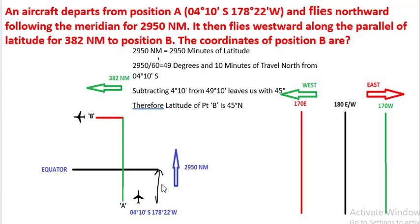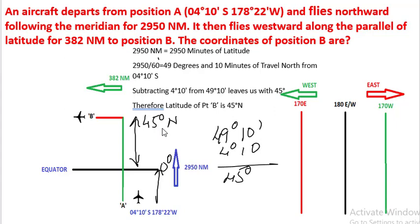So from 49 degrees 10 minutes we will subtract 4 degrees 10 minutes, which leaves us with 45 degrees. So this is the 45 degrees that the aircraft will travel and reach 45 degrees to the north. That is the new latitude of the aircraft.